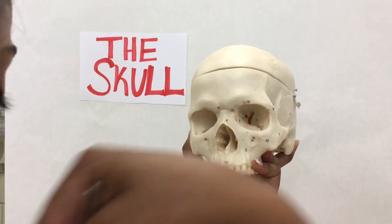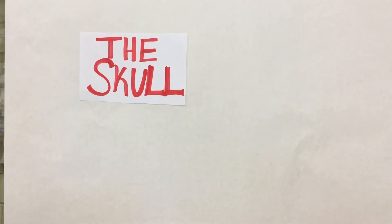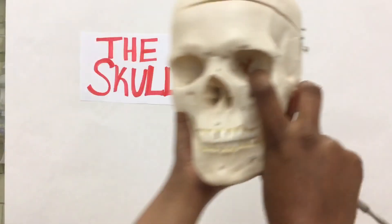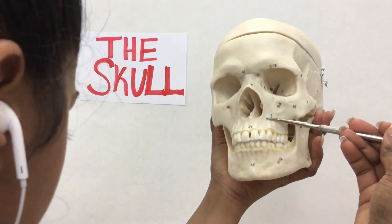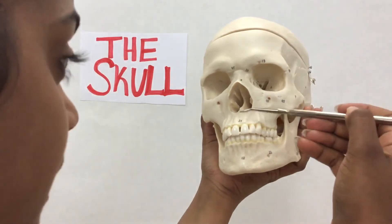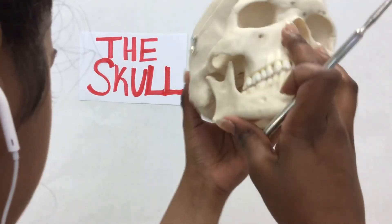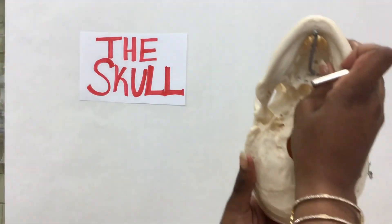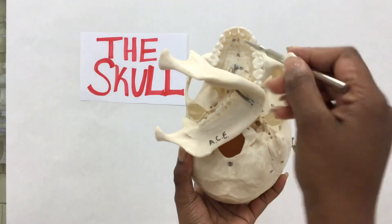And then we have the maxilla. The maxilla is right here. We have the alveolar process and the palatine process, which is right there.